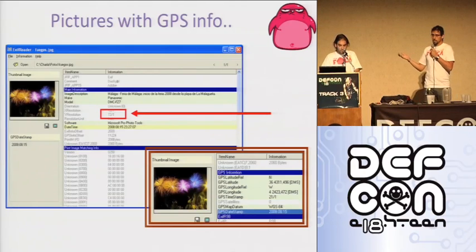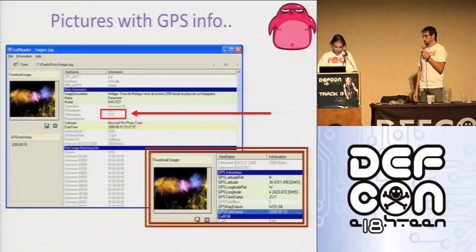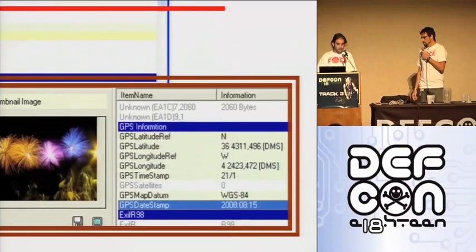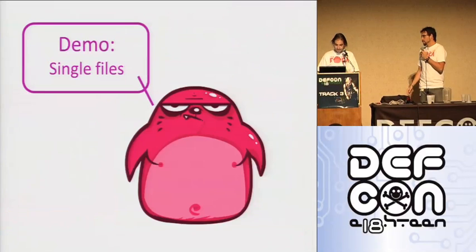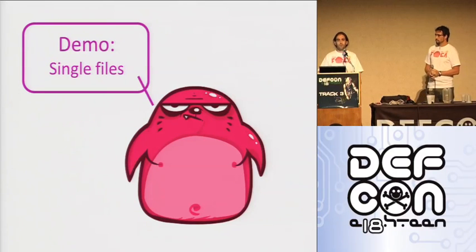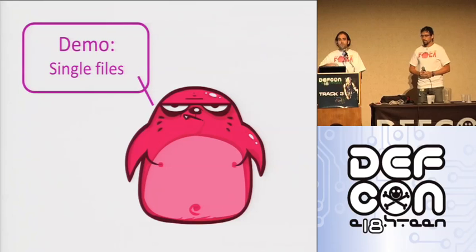One example is pictures — they have GPS information. So not only office documents but graphical documents also have information, including GPS coordinates. So let's start with the first demo. This demo is about FOCA as a desktop tool — a tool you can use to extract metadata, analyze documents, and so on.